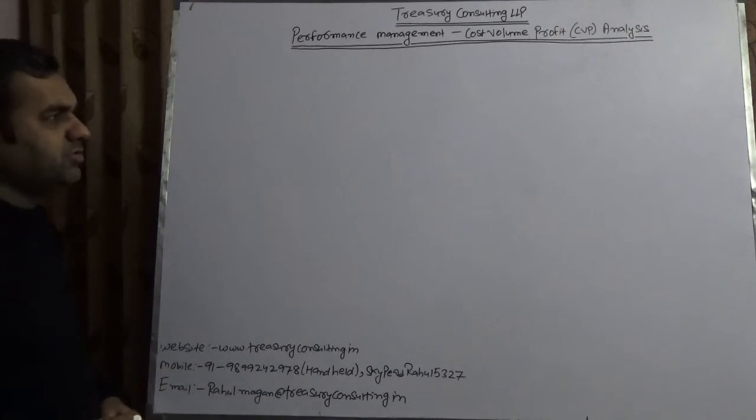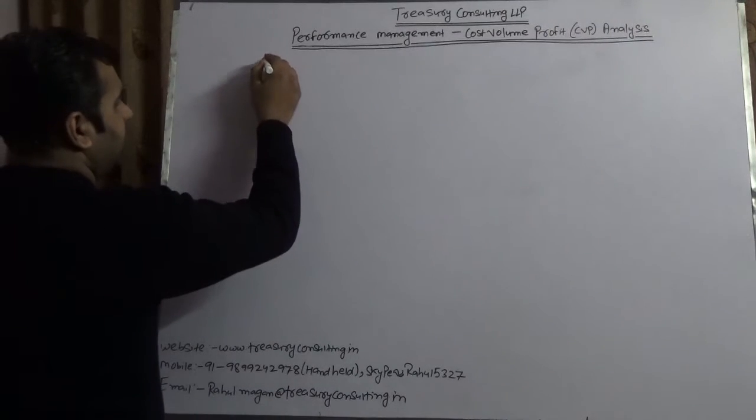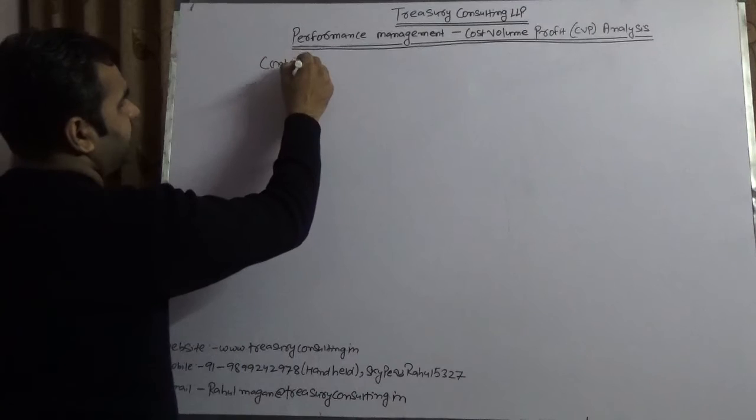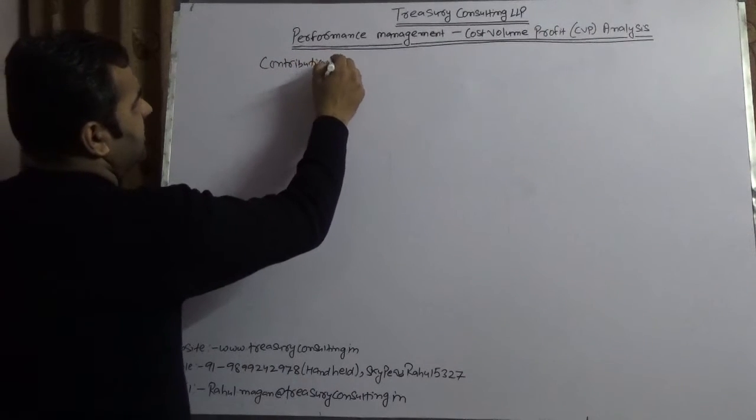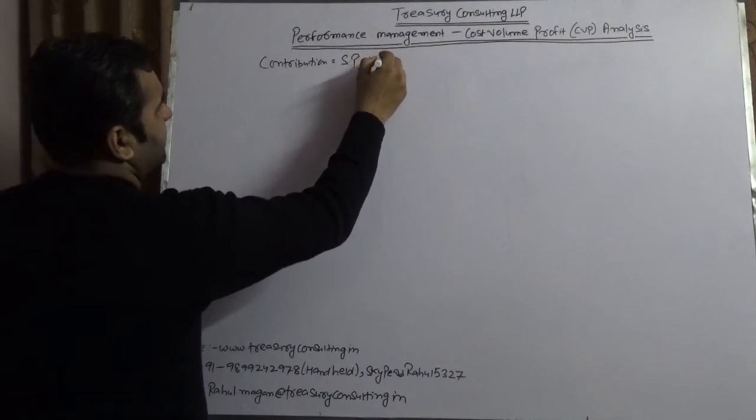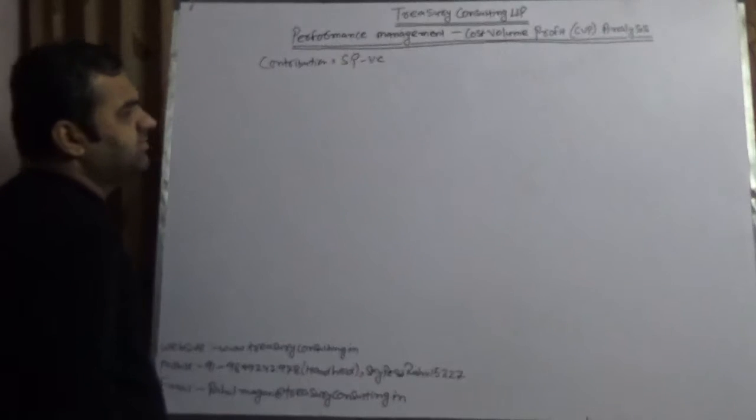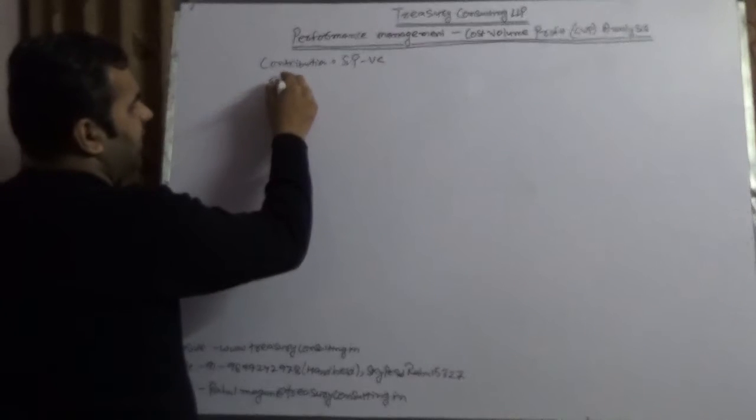First, we will introduce a few terms. The first term is Contribution. Contribution is nothing but Selling Price minus Variable Cost. Another thing we want to highlight is Breakeven Point. Breakeven Point is Fixed Cost divided by Contribution.